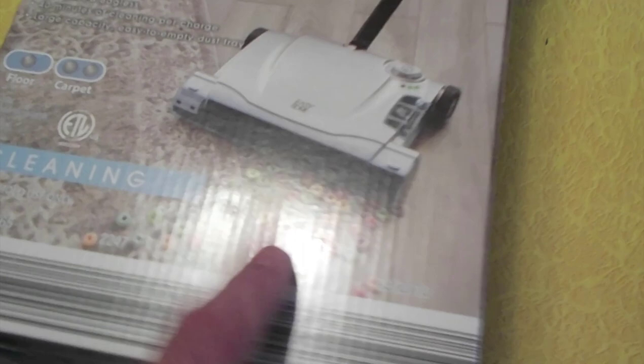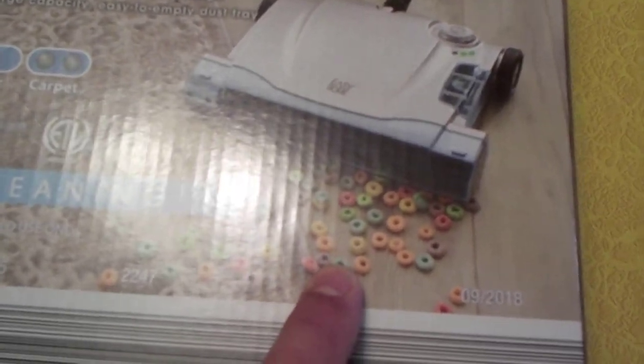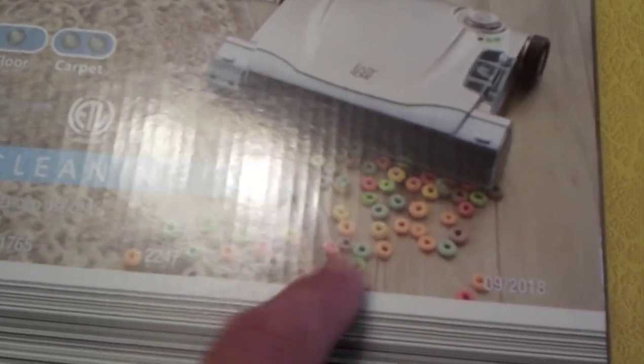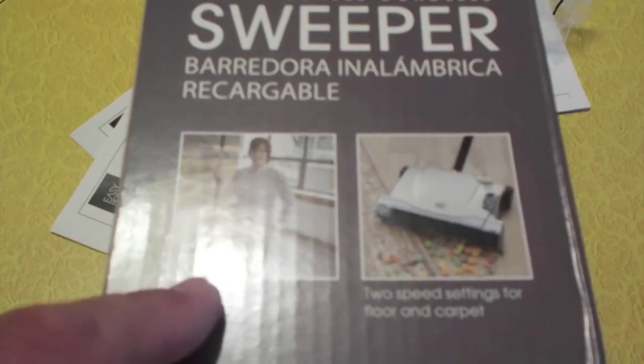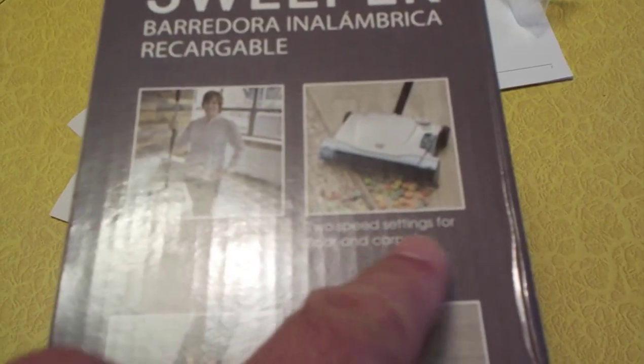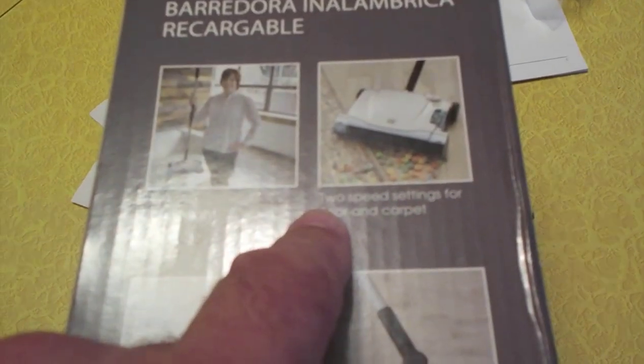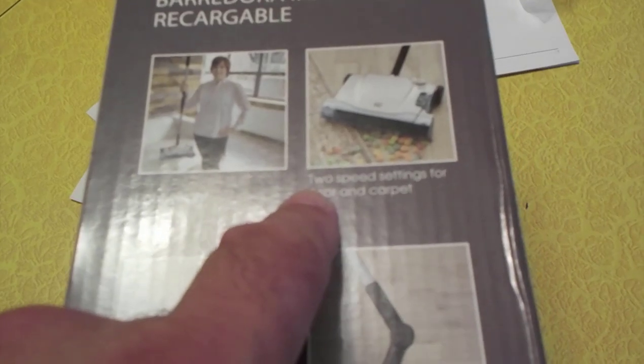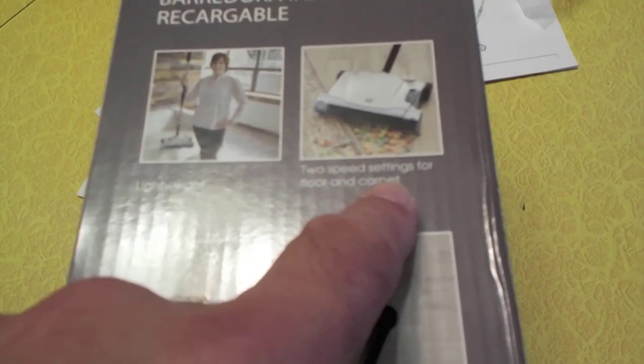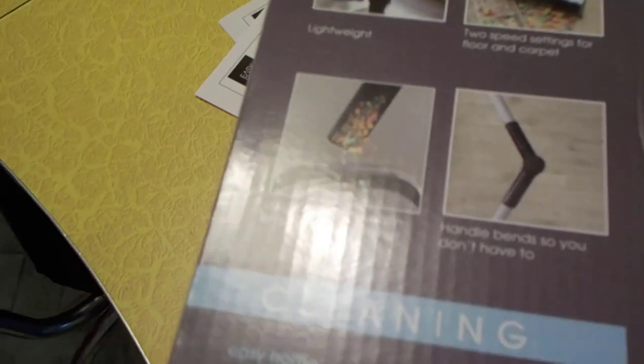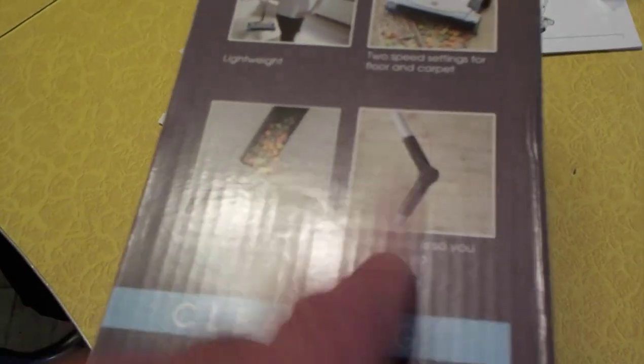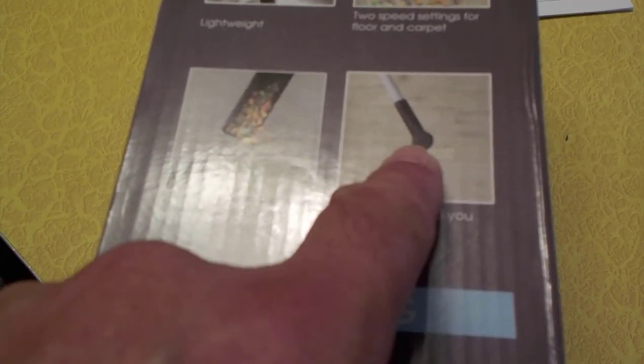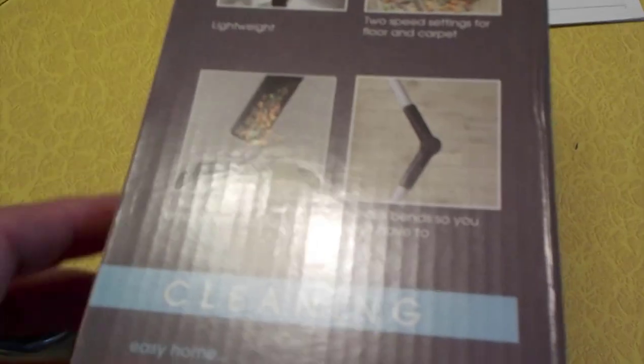Here they're saying it picks up cereals. I know that shark that we have has a hard time with Cheerios and stuff like that. Lightweight, two speed settings. Slow speed for hard floors, fast speed for carpet. Easy to empty. The handle breaks so you can go under stuff.